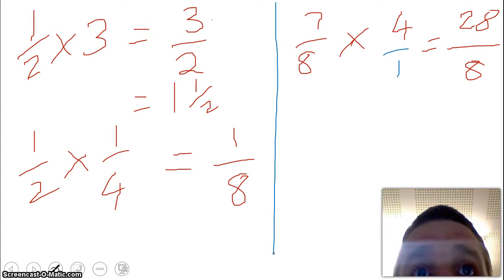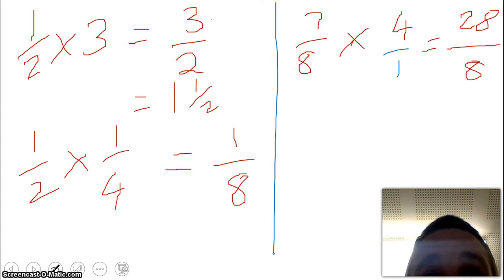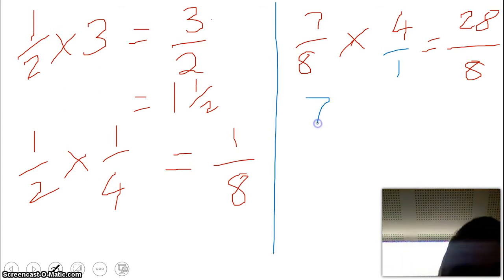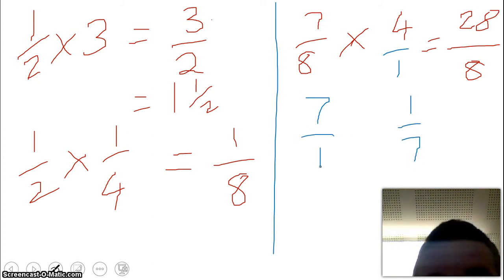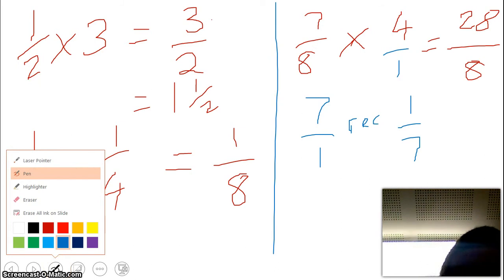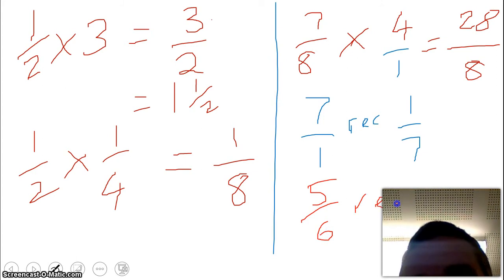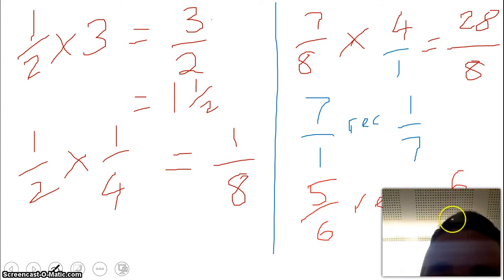The next thing we need to learn about today, we need to learn about reciprocals. Now a reciprocal is a number multiplied by the number is equal to 1. So the reciprocal of a number, say for example I need the reciprocal of 7, the reciprocal is 1 over 7. 7 over 1, the reciprocal becomes 1 over 7. If we had a more complicated example, such as 5 over 6, the reciprocal becomes, we flip it upside down, 6 over 5.